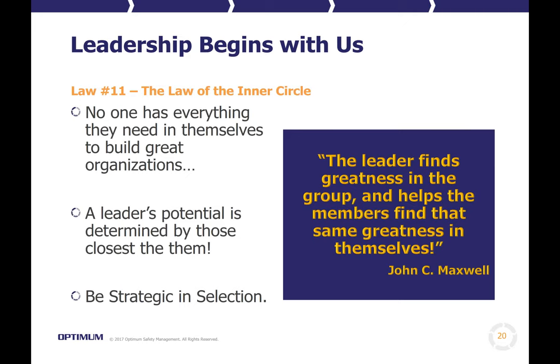Law number 11 is the Law of the Inner Circle. No one has everything they need in themselves to build great organizations. A leader's potential is determined by those closest to them. Andrew Carnegie knew this when he started US Steel — he surrounded himself with leaders from different disciplines so that in and of themselves as a whole group they had everything they needed. If he found a deficiency, he went and brought somebody else in. We need to be strategic in that selection. The leader finds greatness in the group and then helps the members find that same greatness in themselves.